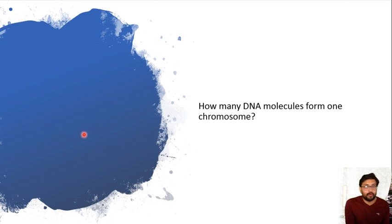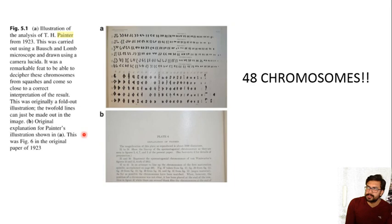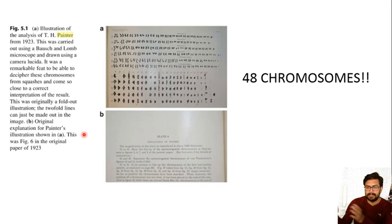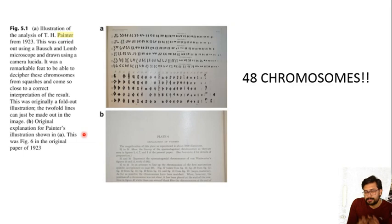One key question: how many DNA molecules form one chromosome? It is a single DNA molecule that forms a chromosome. After Sutton and Boveri's chromosomal theory of inheritance was accepted, it was not yet established how many chromosomes human beings had. Various theories circulated. In 1923, Theophilus Painter studied squash specimens of testis tissue and examined the spermatozoa.